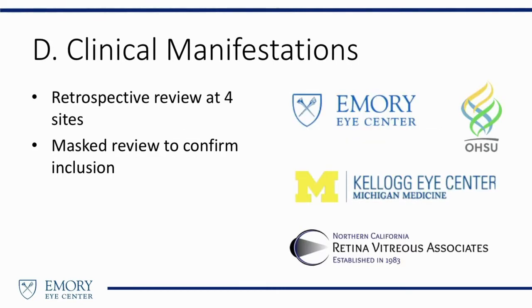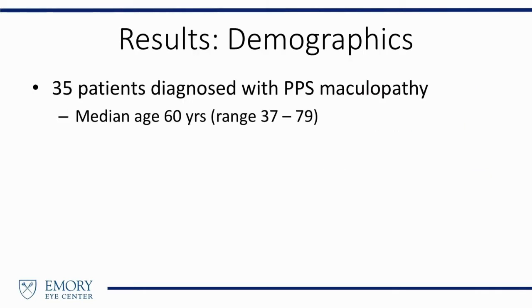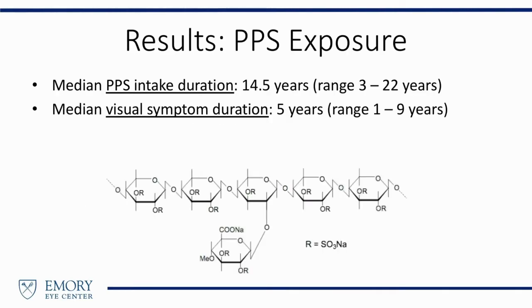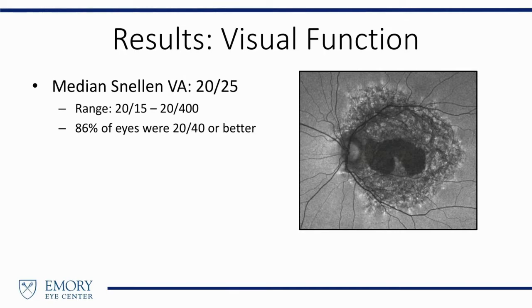So what are the clinical manifestations of this condition? We teamed up with several other institutions to retrospectively collect cases. We identified 35 cases. The median age was 60 years old. These were nearly all women. The most common presenting diagnoses were AMD or pattern dystrophy, not surprisingly. Patients were chronically exposed to this drug — nearly 15 years' median duration of exposure — although most patients reported visual symptoms of about five years, so the time to onset of disease may be less than 15 years. Visual acuity was fairly well preserved, with 86% of eyes seeing better than 20/40.